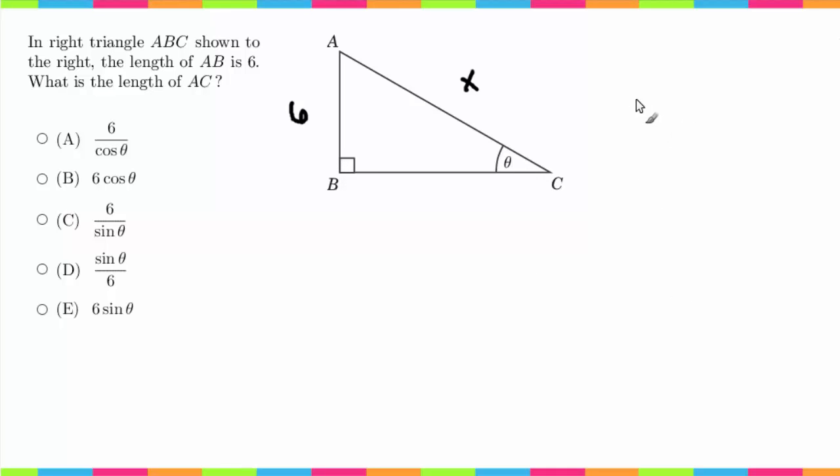Which tells us we can use SOH CAH TOA to solve. You can only use sine, cosine, and tangent when you're dealing with a right triangle. Don't forget that.